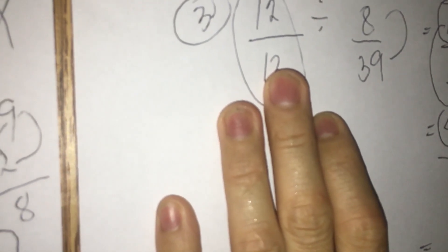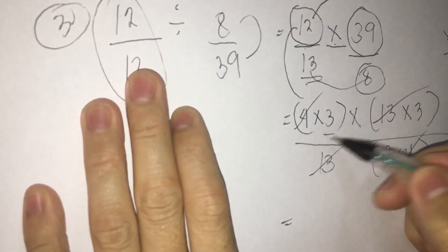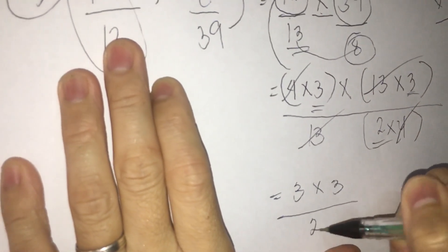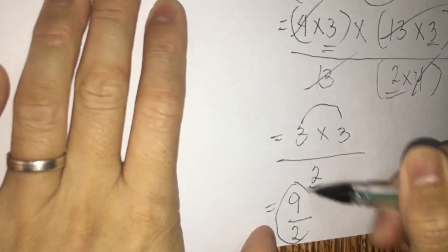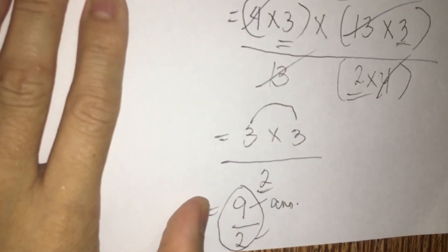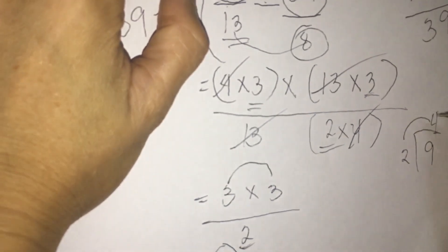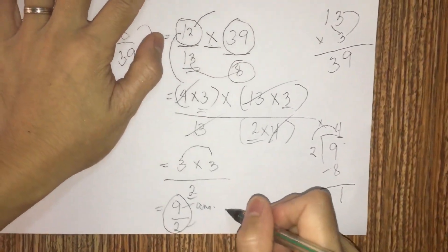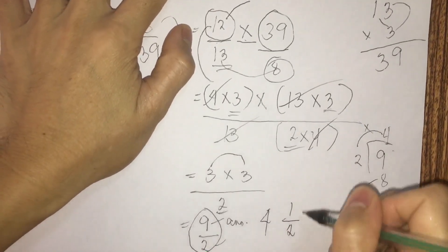After cancelling the common factors, we're left with 3 times 3 over 2. So 3 times 3 is 9, and we copy the 2, giving us 9 over 2. Now we simplify: 9 divided by 2. How many 2s in 9? That's 4, with a remainder. 2 times 4 is 8, and 9 minus 8 is 1. So our final answer is 4 and 1/2. This is already simplified.